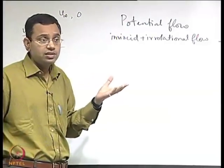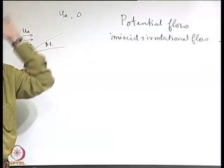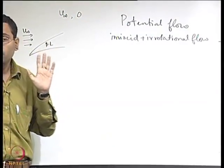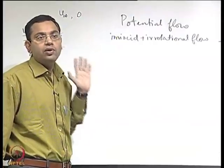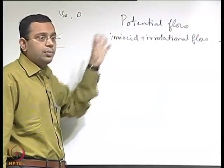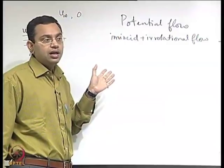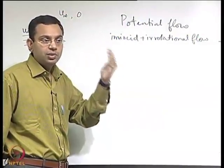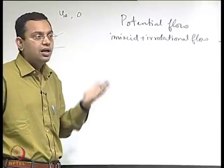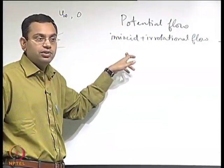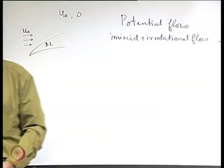Outside the boundary layer, the flow is as good as inviscid and also irrotational as a free stream condition. It will remain irrotational over the entire region over the body until boundary layer separation occurs, after which these conclusions no longer hold. So these considerations apply as long as the boundary layer is growing and there is no separation. At least up to that limit, it is important to calculate the pressure field outside the boundary layer using potential flow theory, since the same pressure field is imposed on the fluid within the boundary layer.